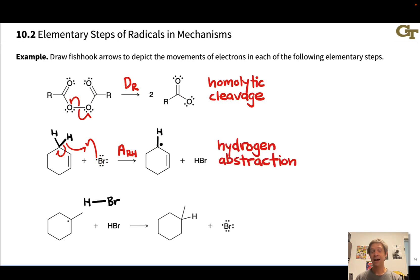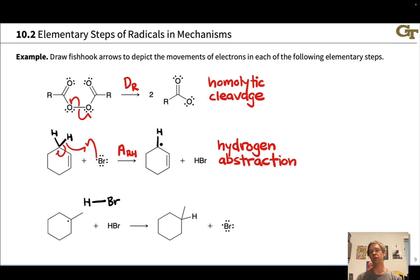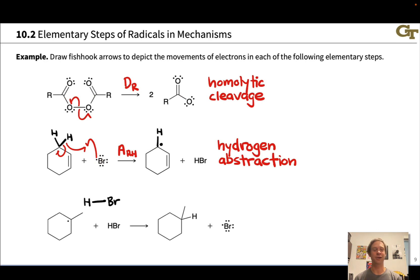This is what we call hydrogen abstraction. The bromine atom is abstracting a hydrogen from the cyclohexene — not a proton transfer, not a hydride transfer, but a hydrogen abstraction.